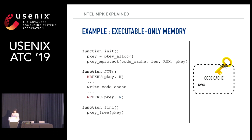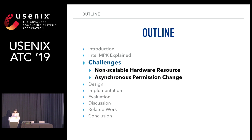One interesting feature of MPK is that it supports executable-only memory at the hardware level. For example, if you want to make the JIT code cache executable-only to prevent code reuse attacks such as JIT-ROP, you can simply revoke every permission of the MPK key. To utilize MPK for fast memory isolation and protection, we need to address two challenges: non-scalable hardware resources and asynchronous permission change.